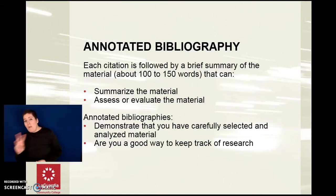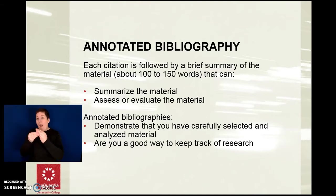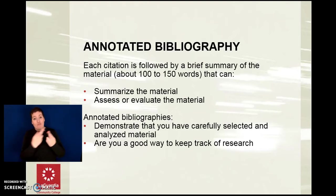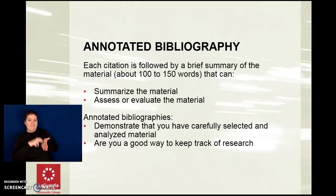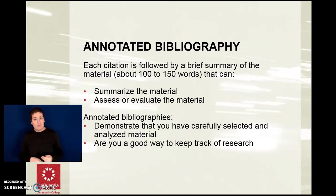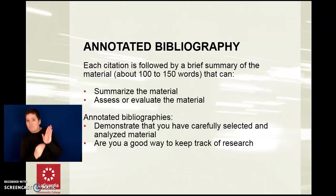In an annotated bibliography, each citation is followed by a brief summary of the material, typically about 100 to 150 words, that can summarize the material or assess or evaluate it. Annotated bibliographies demonstrate that you have carefully selected and analyzed material and are also a good way to keep track of research.